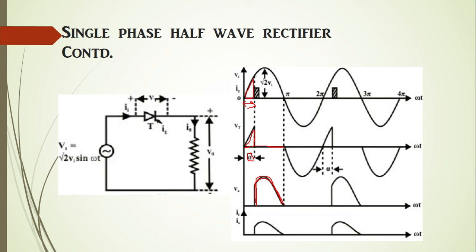The phase-control thyristor is turned on by a short pulse to its gate and turned off during natural or line commutation, because it commutates naturally due to the change in polarity of the input voltage. In the case of a highly inductive load, it is turned off by firing another thyristor during the negative half cycle of the input voltage. We will look into this in later upcoming lectures.